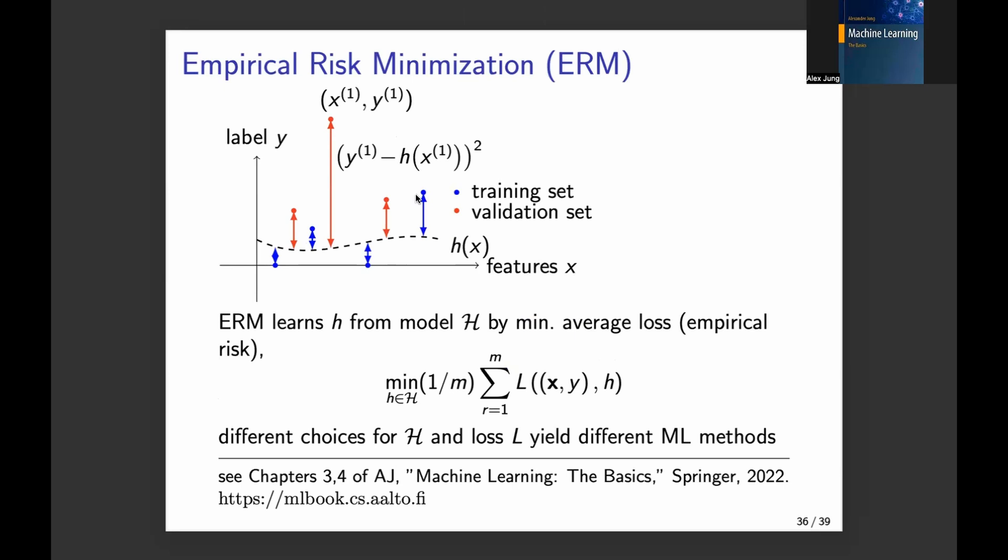So we then average these losses, and we can use different types of loss functions. This is a design choice. For example, we can use the squared error loss here. Squared error loss is a popular choice for measuring prediction errors.